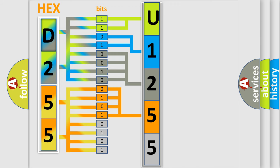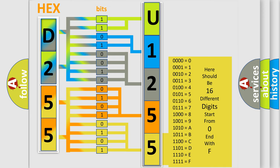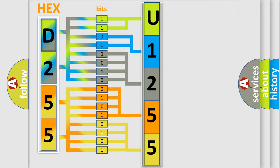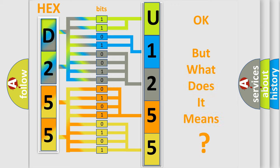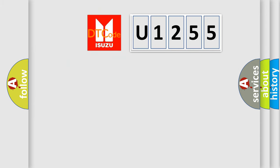A single byte conceals 256 possible combinations. We now know in what way the diagnostic tool translates the number. The number itself does not make sense to us if we cannot assign information about what it actually expresses. So, what does the diagnostic trouble code U1255 interpret specifically?